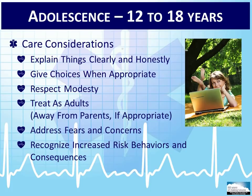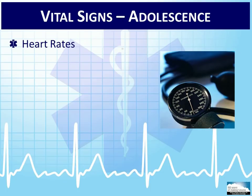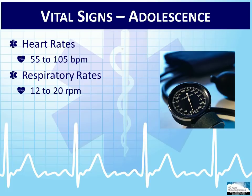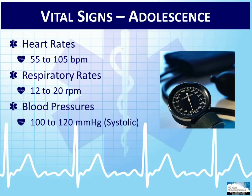Typical vital signs for an adolescent are: heart rates range from 55 to 105 beats per minute, respiratory rates range from 12 to 20 respirations per minute, systolic blood pressures range from 100 to 120 millimeters of mercury, and temperatures are close to a normal adult temperature of 98.6 degrees Fahrenheit. These vital signs are very close to that of an average adult.